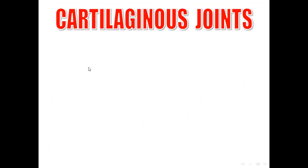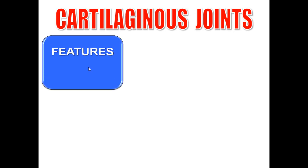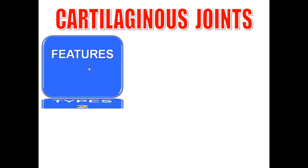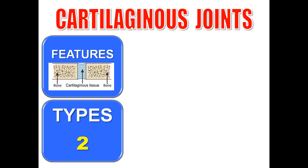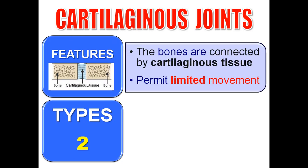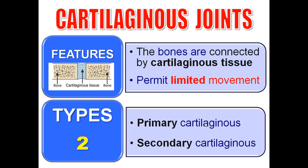Now, cartilaginous joints — what are the features and what are the types? Remember the two criteria: tissue between the bones and the movement. The two bones are connected by cartilaginous tissue and they permit limited movement. We have two types: primary cartilaginous joints and secondary cartilaginous joints.